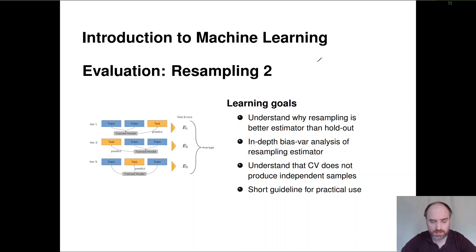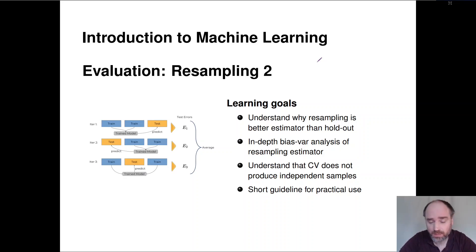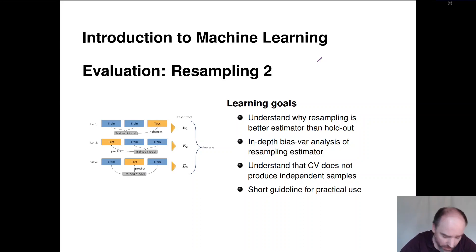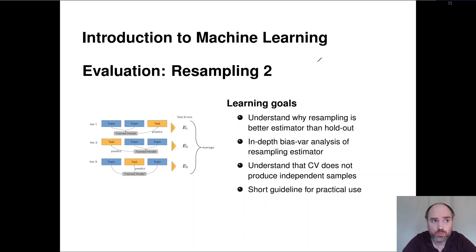Welcome to our next section, which is an in-depth analysis of resampling procedures. We want to understand why resampling is a better estimator than holdout, and we'll address that by doing a bias-variance analysis through a continued empirical example we already began for holdout. We studied bias and variance for holdout depending on its split rate — whether using a third, 50%, or two-thirds for training — and found that two-thirds for training and one-third for testing is a reasonable rule of thumb. We'll redo that for resampling now.